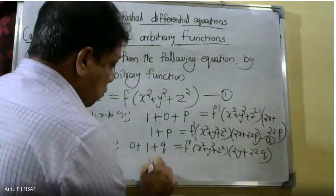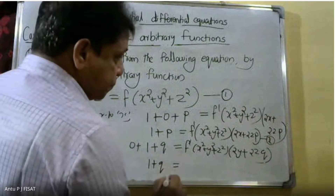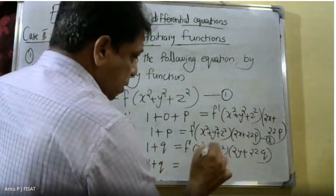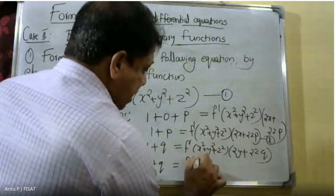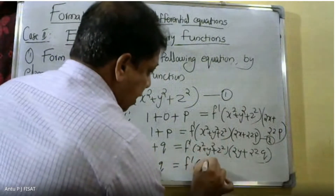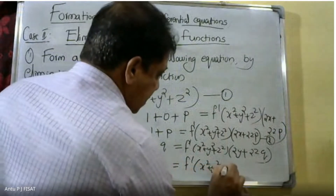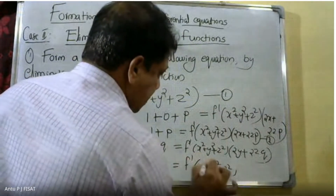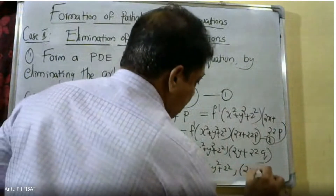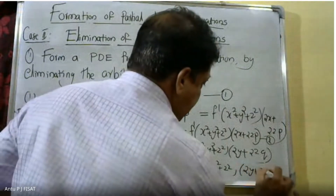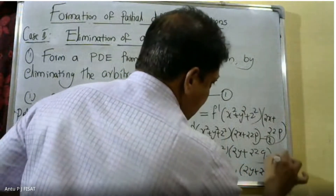Therefore equation 3 is: one plus Q is equal to F dash of X square plus Y square plus Z square into 2Y plus 2Z into Q.